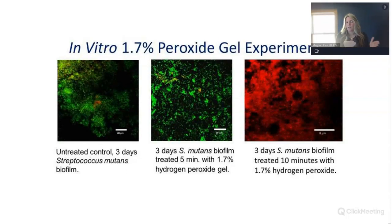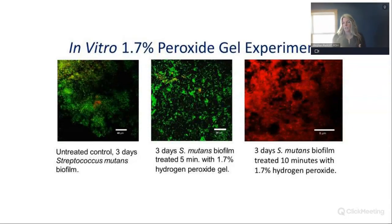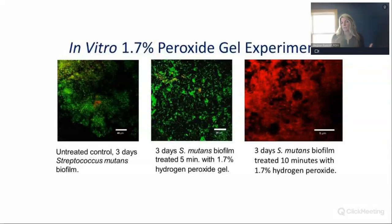Going back to the slide: in the first image where you see all the green, that's where we let strep mutans grow for three days. In the middle slide, we treated it for just five minutes — not a whole lot has happened; the gel is really effective within the first seven to ten minutes. The magic is in the last slide, where we treated for 10 minutes and were able to kill 100% of surface strep mutans. Don't be afraid to treat not just your periodontal patients but also your high caries risk patients.